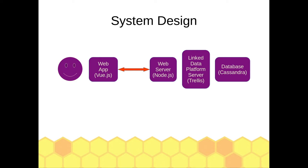Trellis is really responsible for keeping all the data organized. And then finally, on the far right, we have a database. Trellis can plug into a number of different kinds of databases. For production type of use, we're targeting this Cassandra database, which is highly scalable. For development purposes, I've just swapped that out for a more lightweight option I can run on my laptop. But the goal is to run Cassandra there.